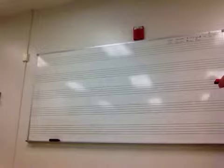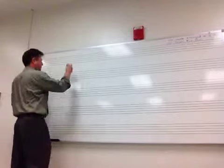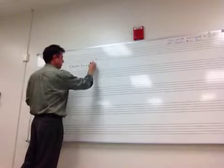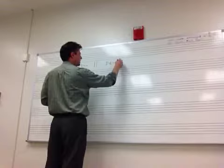This is development in sonata form. We've got our three big sections: Exposition, which we've talked about, which is traditionally repeated. Right after the repeat sign, you get the development.